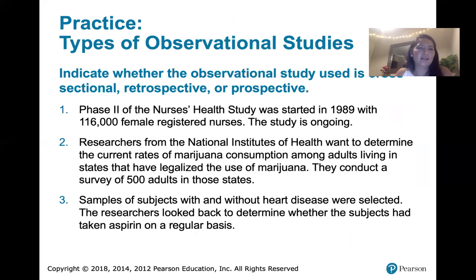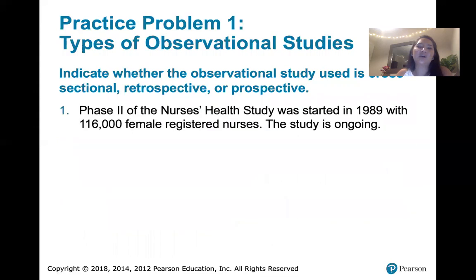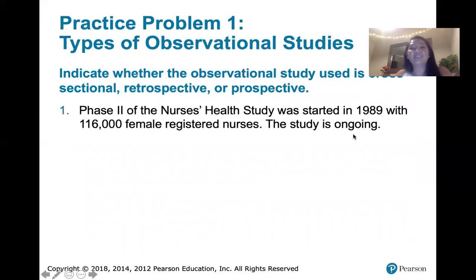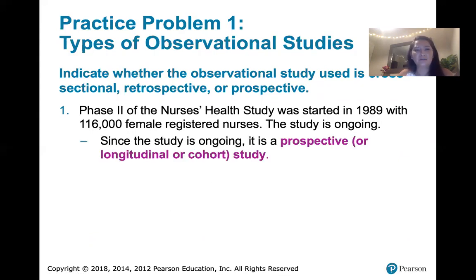The first example: Phase two of the Nurses' Health Study was started in 1989 with 116,000 female registered nurses, and the study is ongoing. If the study started in 1989 and is still going, it started at one point and goes forward — that's prospective or longitudinal. We can think of it as a cohort study.